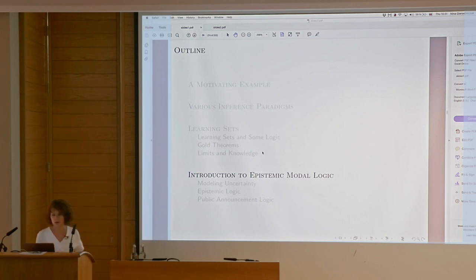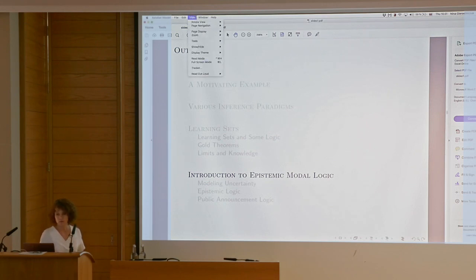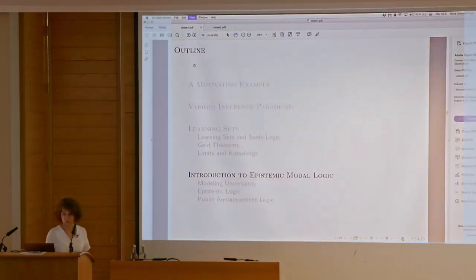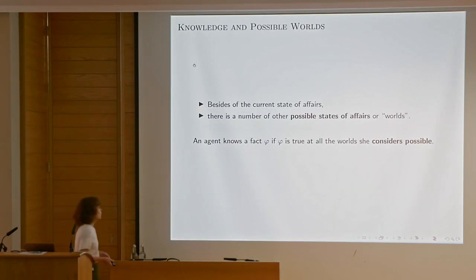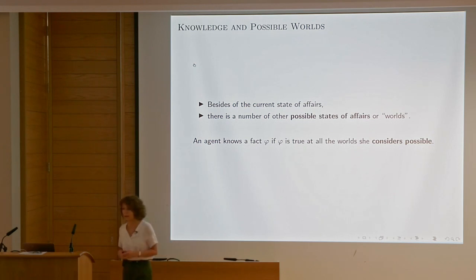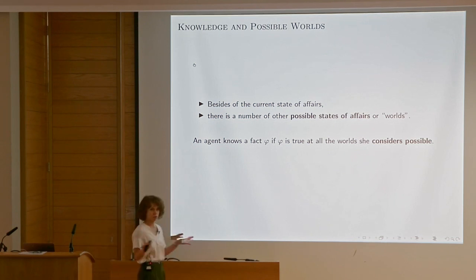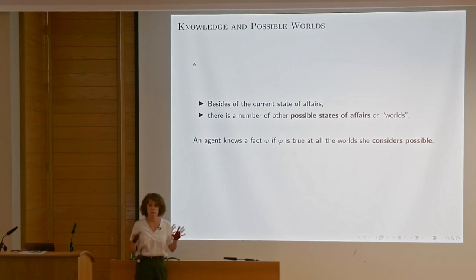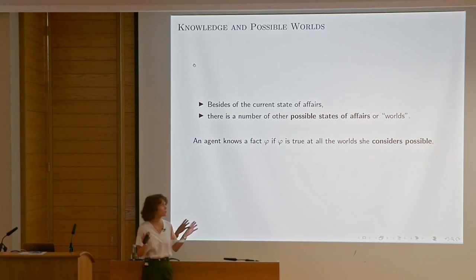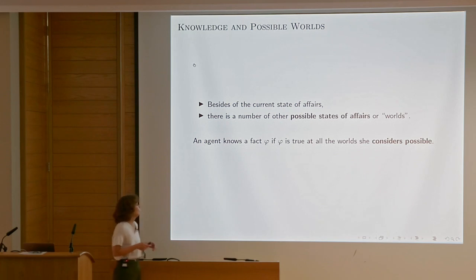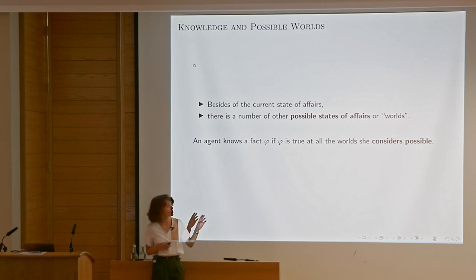How do we do this with modal logic? The idea with modal logic, especially with modeling of knowledge, is that besides the current state of affairs — how things actually are — there is a number of other possible states of affairs, other possibilities, other scenarios that perhaps are not actualized but would be possible. An agent knows a fact φ if it's true in all the possible worlds that she considers.